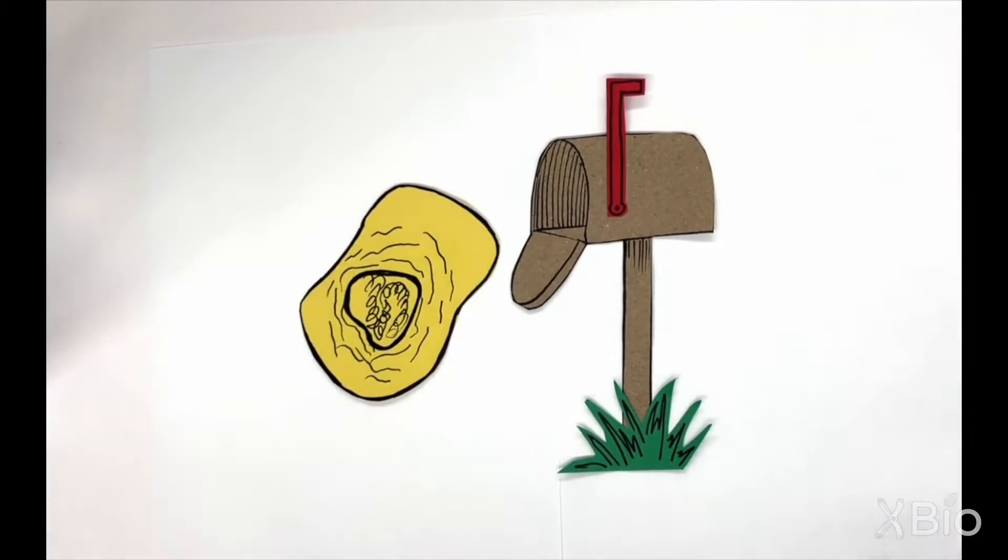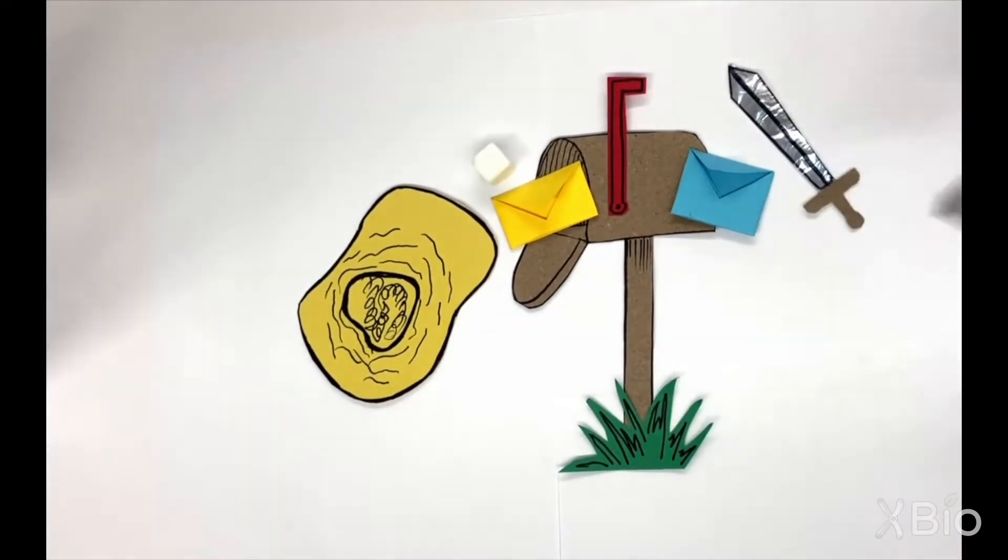The post office has to make sure that the correct hormone letters get to the correct mailbox, or cell. For example, insulin tells cells to absorb sugar from the bloodstream, but adrenaline, a stress hormone, can tell the body to get ready to fight.